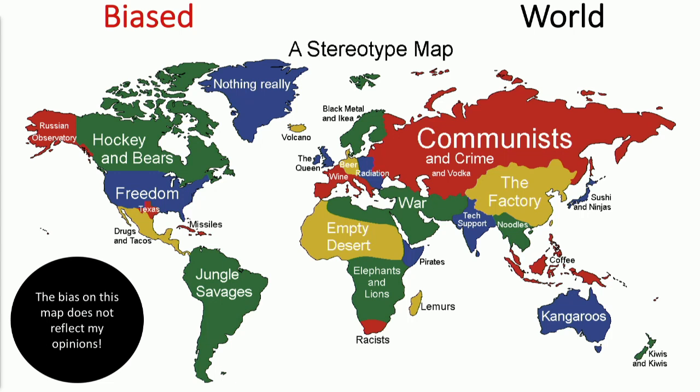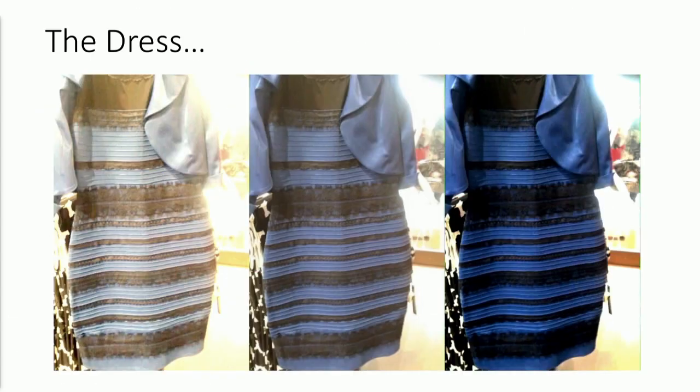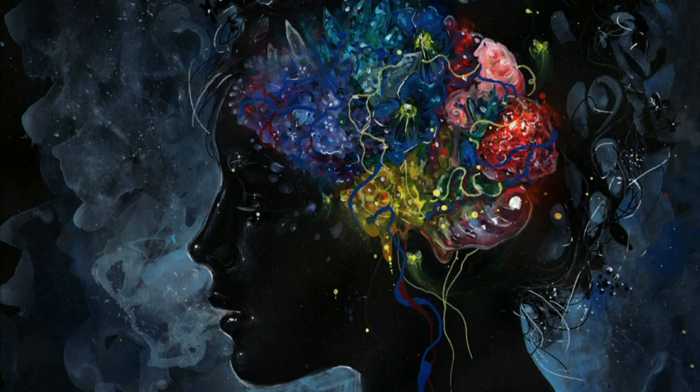Even the title of this map holds prejudice and bias against the average American person. And you all remember this dress and the buzz it created about its color, because each person saw it differently — some people saw it blue and black, others white and gold, and others sandy and blue. The bottom line is we as human beings have biased systems. Our brains are really bad decision makers.